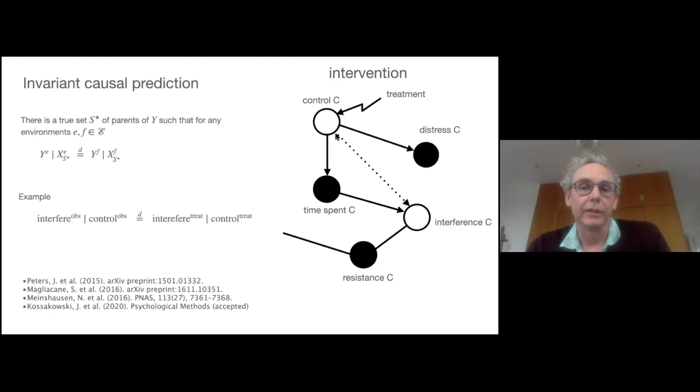What invariant causal prediction does for us is consider the situation where we've observed it and we could find a correlation which of course does not imply any causal relation. But because we also have a measurement of the time spent on particular compulsions, we could condition on this.